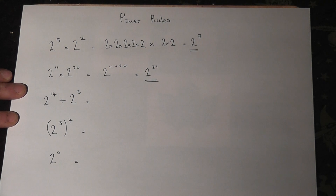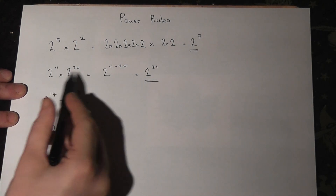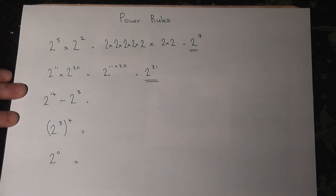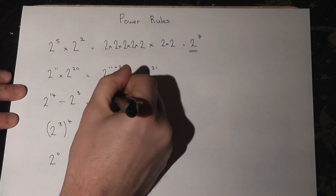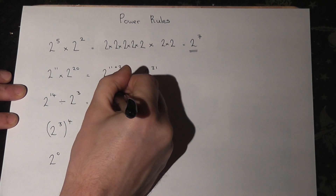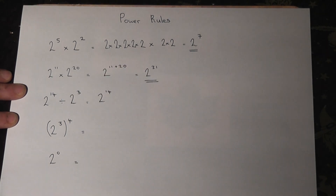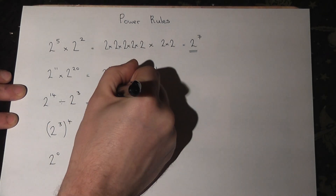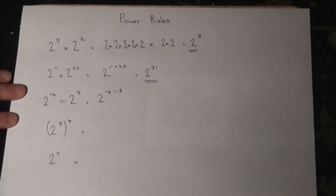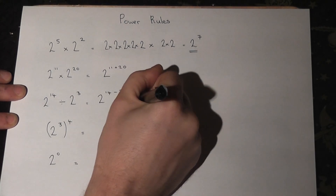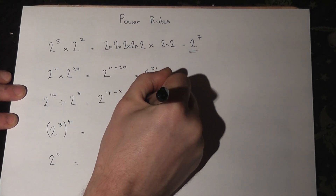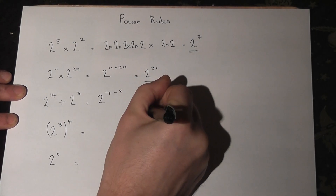So when you multiply, we add the powers. When you divide, you just reverse that and subtract the powers. So 2 to the power of 14 divided by 2 to the power of 3 just becomes 2 to the power of 11.